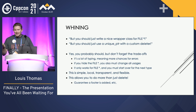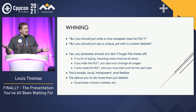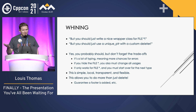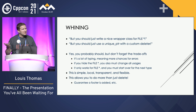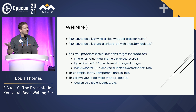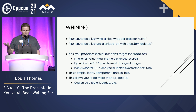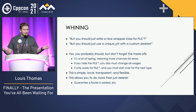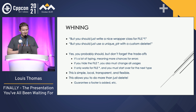Now, I can hear people going: why didn't you write a wrapper class for file, or why didn't you use unique pointer with a custom deleter? Well, yes, probably you should, but don't forget the trade-offs. It's a lot of typing to get one of those working. If you hide the file star behind a class, now all the things that want the file star can't have it — you've got to figure out how to change those, and it only works for file star. If you want to use it for anything else, you've got to write it all over again. This approach: simple, local, transparent, flexible — and it's actually pretty cool because you can do other things besides just close files.